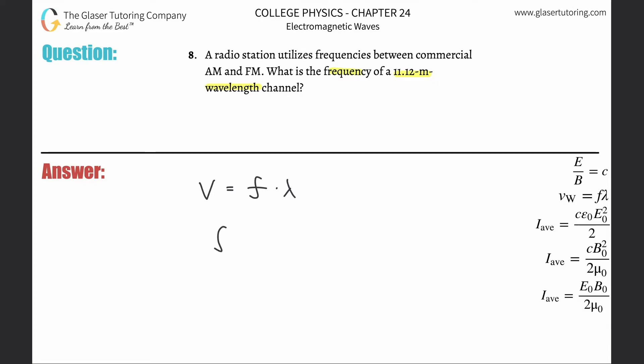So now we've got to find the frequency, divide both sides by the wavelength, and we simply get now that it's equal to the velocity over the wavelength.